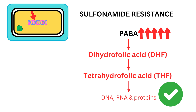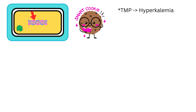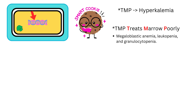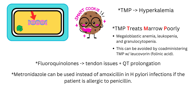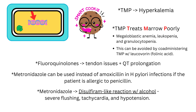TMP can cause hyperkalemia at high doses and treats marrow poorly — it can cause megaloblastic anemia, leukopenia, and granulocytopenia. This can be avoided by co-administering TMP with leucovorin. Fluoroquinolones can cause tendonitis, tendon rupture, and QT prolongation. Metronidazole can be used in place of amoxicillin for H. pylori infections if the patient is allergic to penicillin. It can also cause a disulfiram-like reaction with alcohol, presenting with severe flushing, tachycardia, and hypotension.